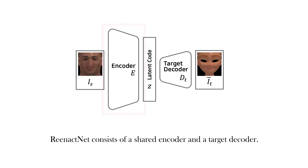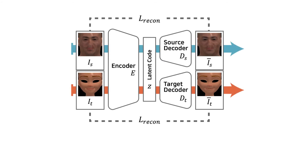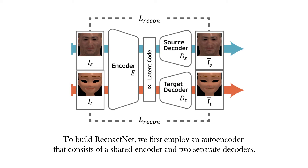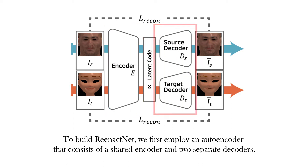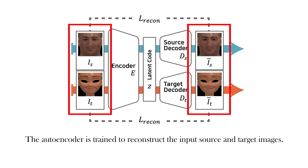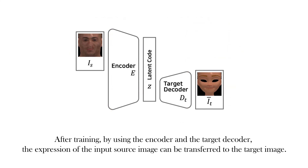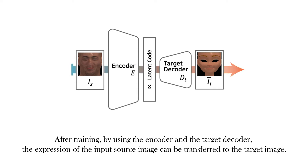The reenactment network consists of a shared encoder and a target decoder. It generates a target image from a given source image. To build the reenactment network, we first employ an autoencoder consisting of a shared encoder and two separate decoders. The autoencoder is trained to reconstruct the input source and target images. After training, by using the encoder and the target decoder, the expression of the input source image can be transferred to the target image.